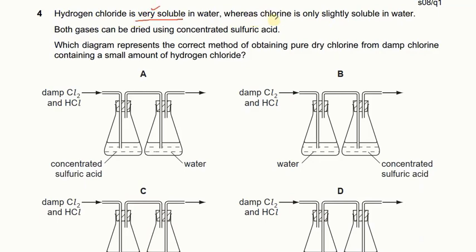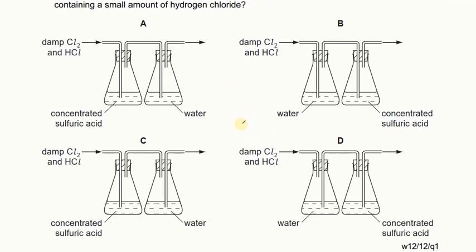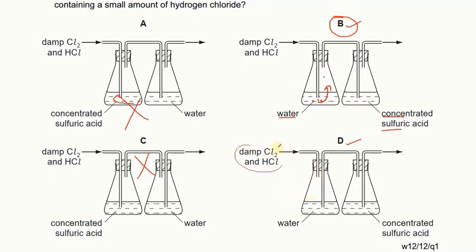Hydrogen chloride is very soluble and chlorine is only slightly soluble. Both gases can be dried using concentrated sulfuric acid. First we pass the gases through water and then through the acid drying agent. Options B and D are correct because in these we pass the gas through water first and then through sulfuric acid. The tubes must be inside the liquid so the gas passes through the water. The soluble gas dissolves in water and the insoluble gas comes out and is then dried. So B is the right answer.